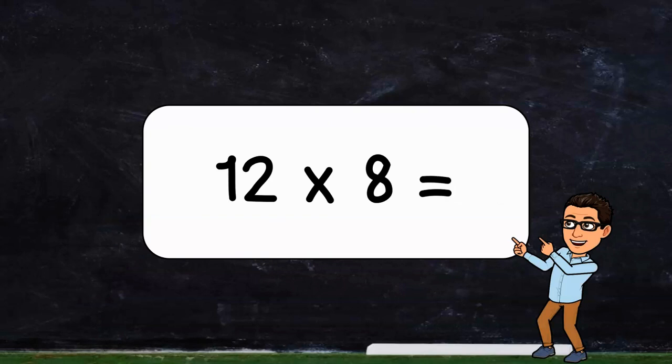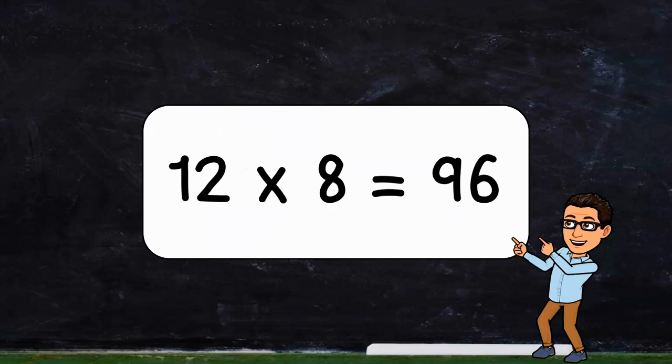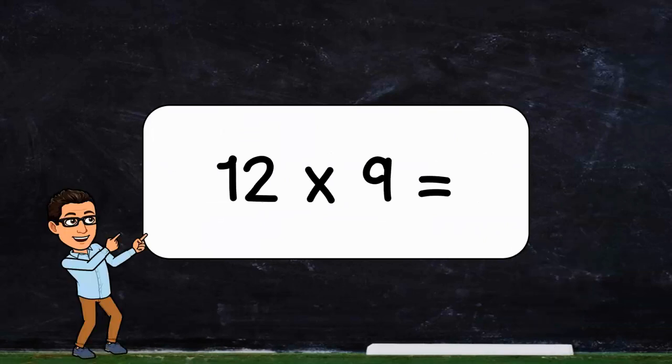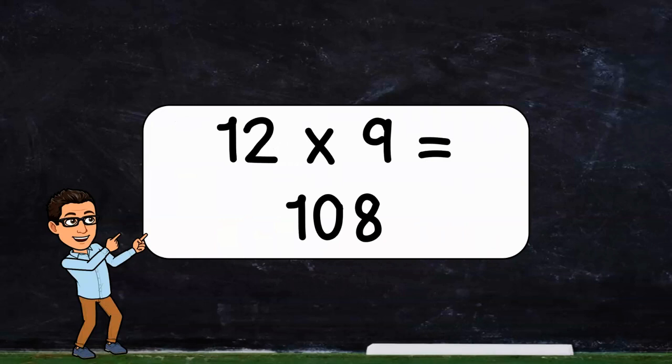12 times 8, 12 times 8 equals 96. 12 times 9, 12 times 9 is 108.